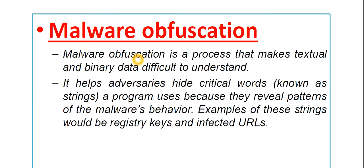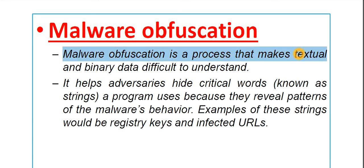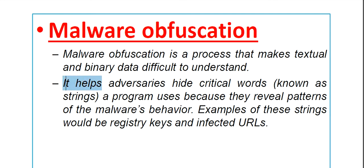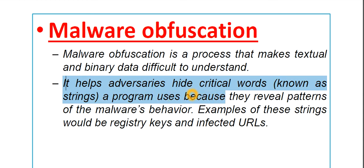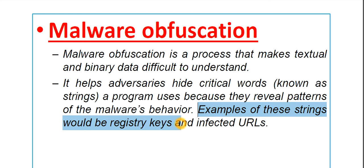Starting with obfuscation: malware obfuscation is a process that makes textual and binary data difficult to understand. It helps adversaries to hide critical words known as strings, which a program uses because they reveal patterns of the malware's behavior. In the last lecture I discussed these strings in detail, so refer back if needed. Examples of these strings would be registry keys or infected URLs.